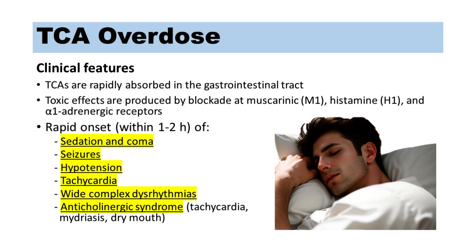Clinical features of TCA overdose. TCAs are rapidly absorbed in the gastrointestinal tract. Toxic effects are produced by blockade at muscarinic, histamine, and alpha-1 adrenergic receptors. Symptoms and signs of TCA overdose usually occur within one to two hours, which include sedation and coma, seizures, hypotension, tachycardia, wide-complex dysrhythmias, and anticholinergic syndrome, such as tachycardia, mydriasis, and dry mouth.